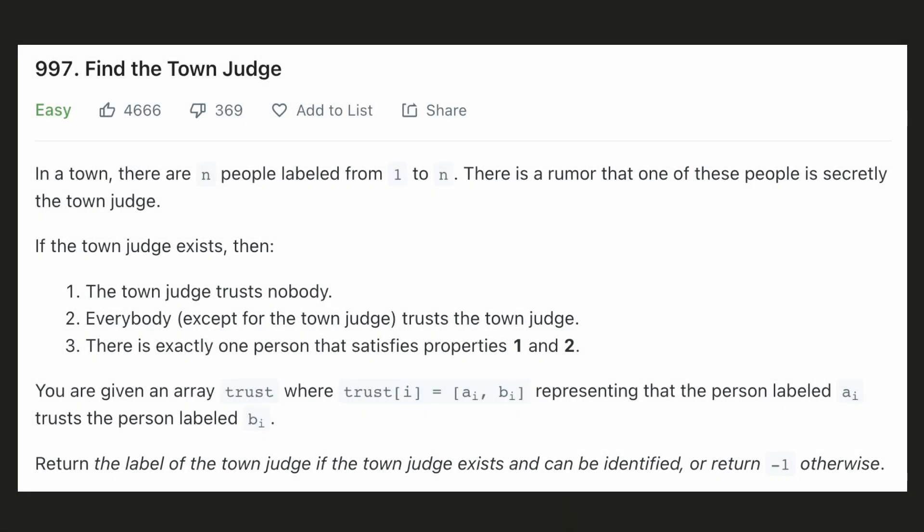Hello everyone, let's try to be a cheat code ninja today. In this problem we are given n people labeled from 1 to n and we are given an array that represents whether a person trusts some other person.